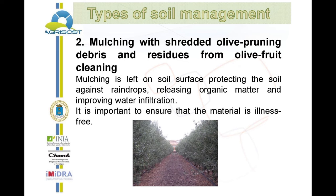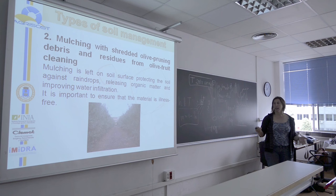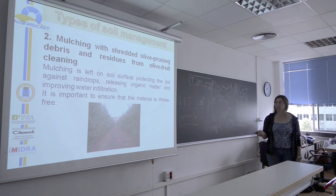Other choices: mulching with olive pruning residues and residues from olive fruit cleaning. Mulching is left on the surface, not mixed with the soil. This protects the soil against raindrops, and releases organic matter over time, improving the water infiltration ratio. But it's very important that the material is illness-free, because otherwise we can spread some illness or plagues.